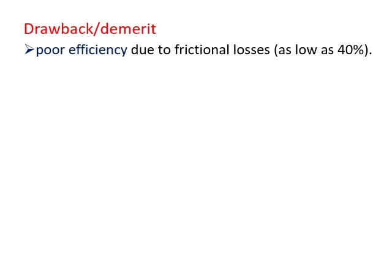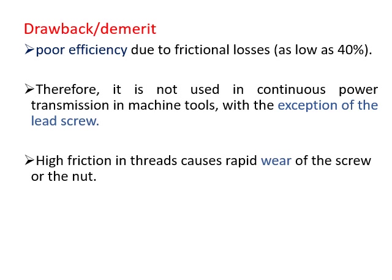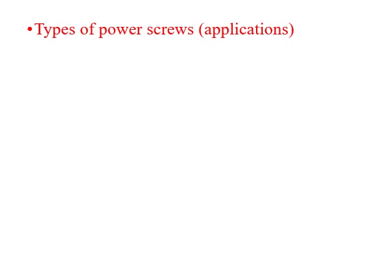The drawbacks of power screws include poor efficiency due to frictional losses — as low as 40 to 50 percent efficiency. Therefore, power screws are not used in continuous power transmission in machine tools, with the exception of the lead screw in the lathe. High friction in the thread also causes rapid wear of the screw or nut.